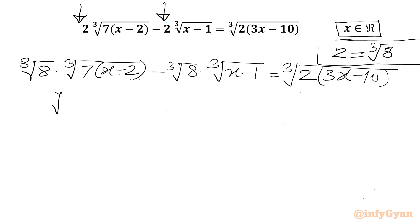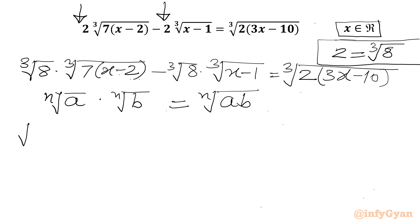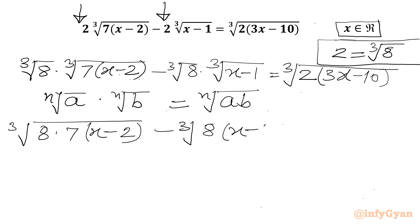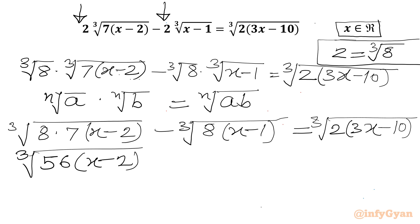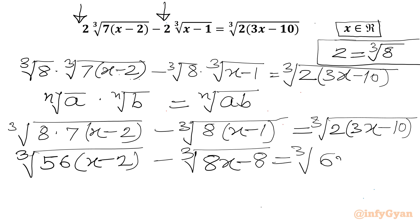Now we know the radical property. Using it, we can combine the cube roots: cube root of 56 times (x minus 2) minus cube root of (8x minus 8) equals cube root of (6x minus 20).